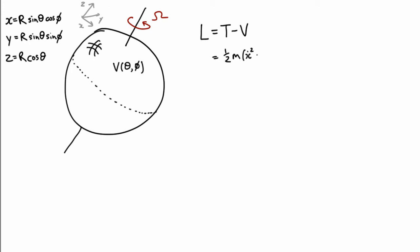Our kinetic energy is one half m times x dot squared plus y dot squared plus z dot squared. And our potential energy is whatever this potential gives us. And we can expand this out. So this is just a matter of taking the derivatives of these and expanding out.